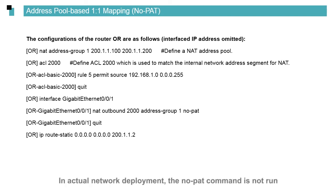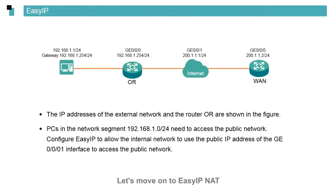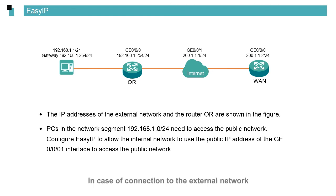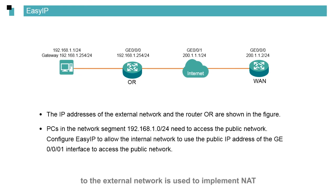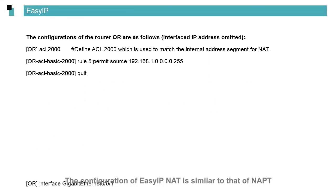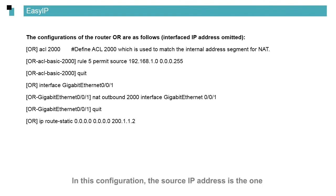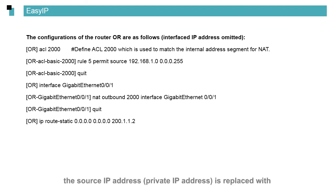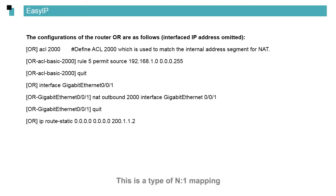In actual network deployment, the NOPAT command is not typically run. For Easy IP NAT, some small and medium-sized enterprises use private IP addresses for the internal network. When connecting to the external network, the public IP address of the router interface connecting to the external network is used to implement NAT. All PCs on the internal network use this public IP address to access the external network, so purchasing additional IP addresses from the carrier is not needed. The configuration of Easy IP NAT is similar to that of NAPT — the source IP that matches ACL 2000 is replaced with the interface's public IP address while accessing the public network. This is a type of N:1 mapping.